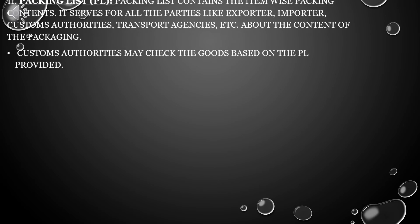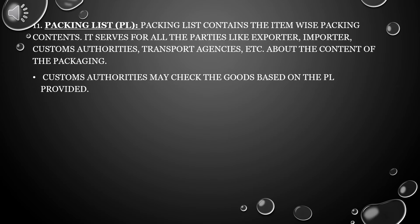Eleventh, Packing List. The Packing List contains the item-wise packing contents. It serves all parties like the exporter, importer, customs authorities, transport agencies, etc. About the content of the packaging, customs authorities may check the goods based on the Packing List provided.